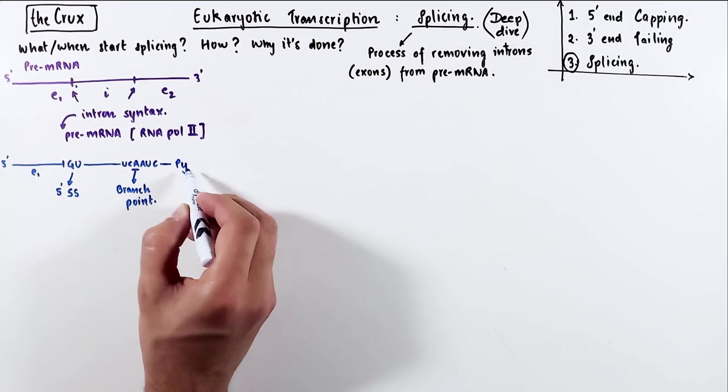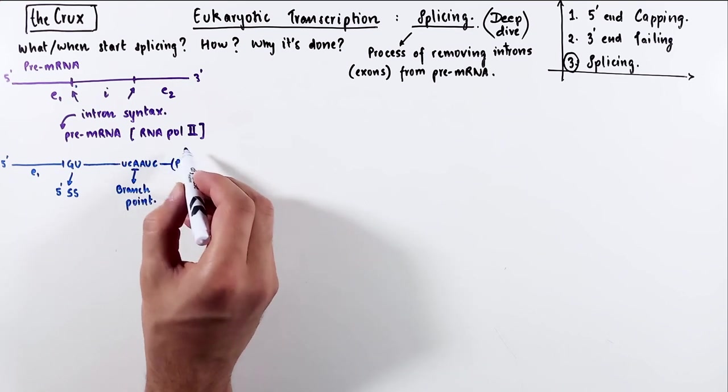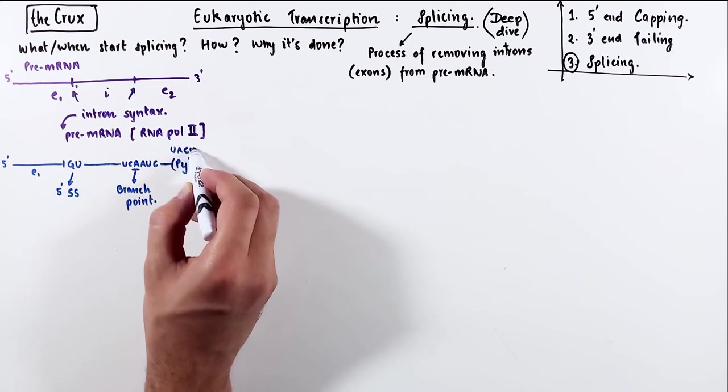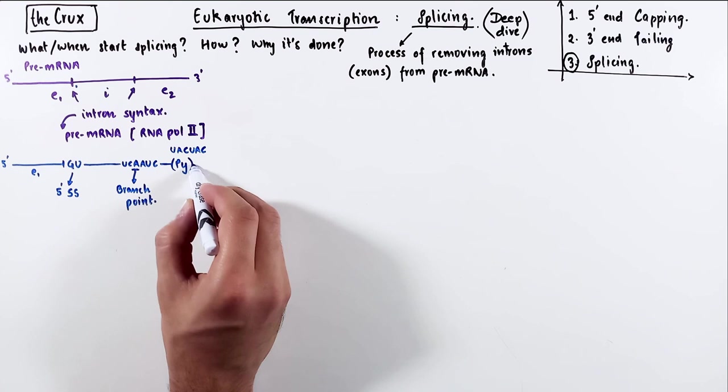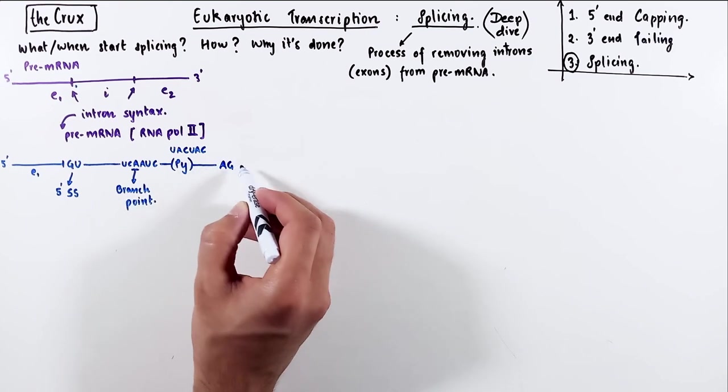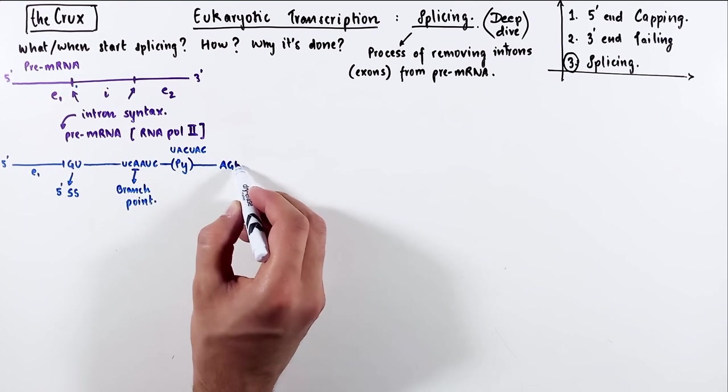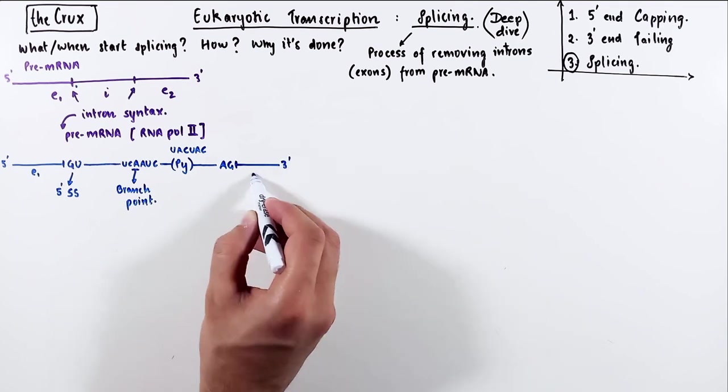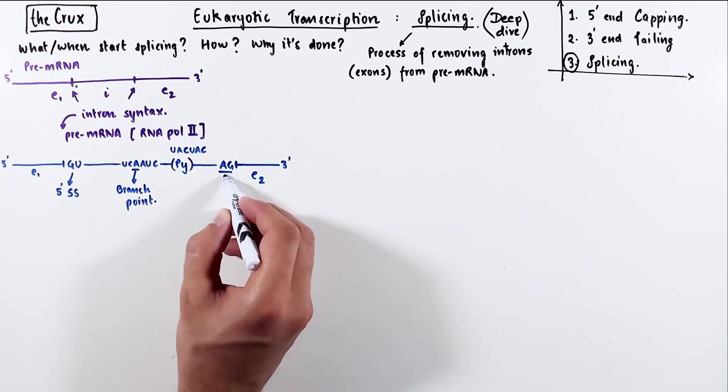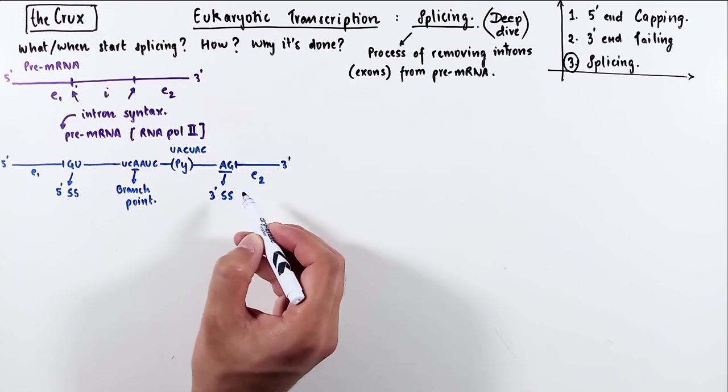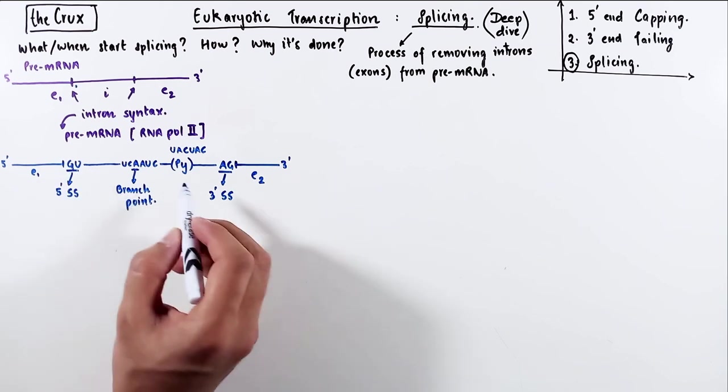Immediately after the branch point, we have a short pyrimidine track made up of a lot of U's and C's. And after this pyrimidine stretch at the 3' end of the intron, you'll find a consistent enrichment of adenine and guanine nucleotides. This AG dinucleotide is called the 3' splice site.